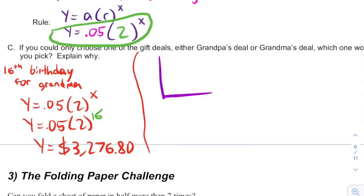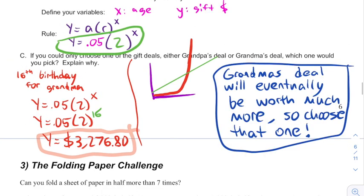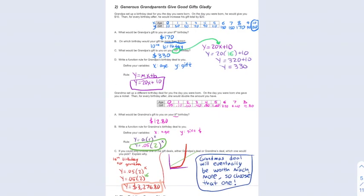Now remember, grandpa, his equation was linear, so the amount of money he's giving you will follow a straight line. Grandma, on the other hand, is following an exponential curve. So eventually, grandma's going to catch up to grandpa, which obviously happens sometime before the sixteenth birthday. And this gap is only going to get greater and greater as we get further and further down the road. So I concluded that eventually grandma's deal is going to be worth a lot more money, so let's choose that one. And this whole problem helps highlight the differences between linear and exponential. While linear might start off worth more, in the long run, exponential's always going to catch up and then move way ahead.